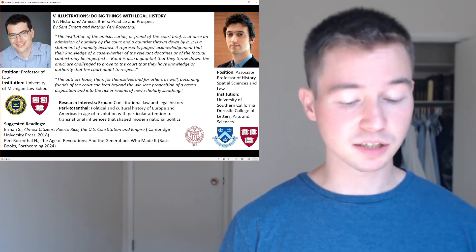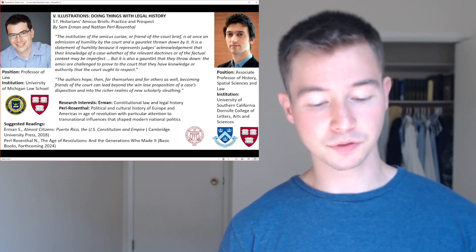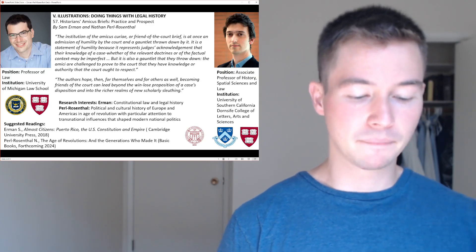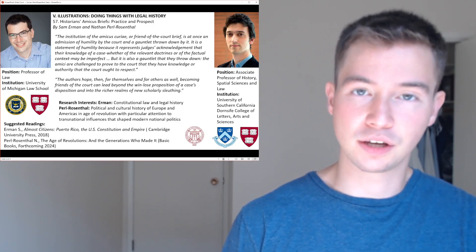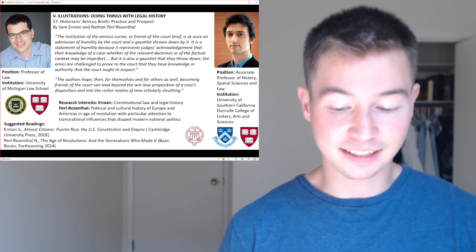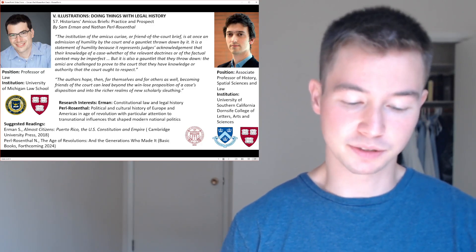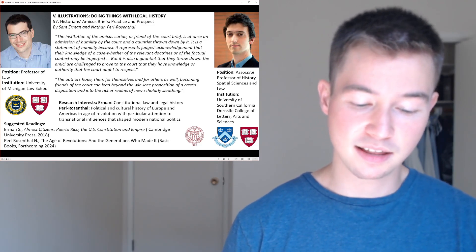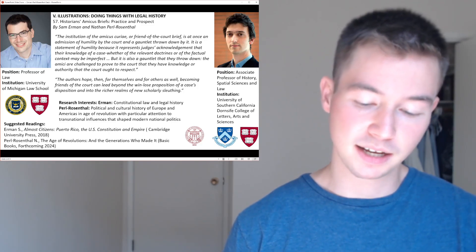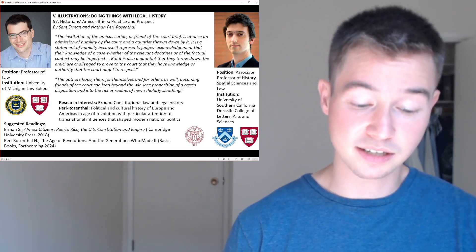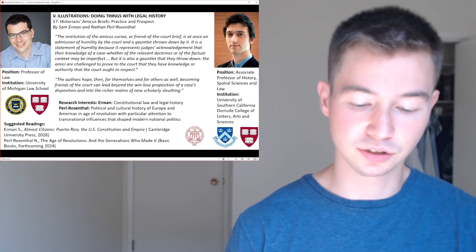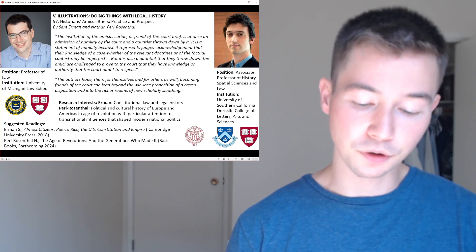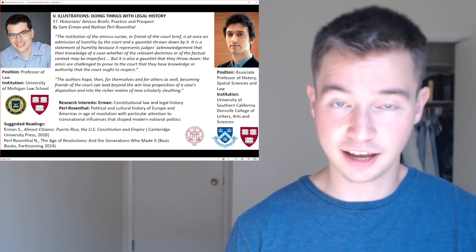Moving to section three, titled 'The Brief of Briefers, or What do Historians Know Anyway?' What expertise can historians offer the court? There are at least three analytically distinct problems lurking within this question. The first is how historians demonstrate to the court that they have expertise and a legitimate role as amici. The second is about what kind of expertise historians can supply to the courts — what is the nature of historians' expertise as it is relevant to the law.